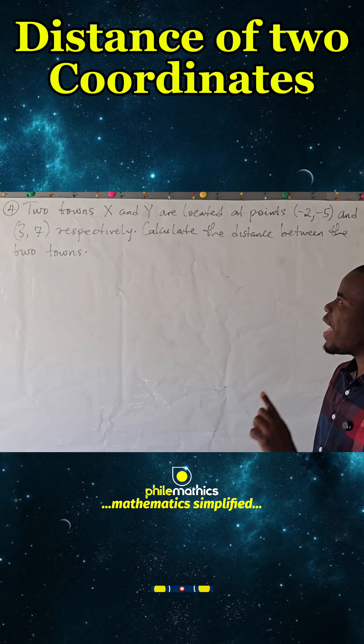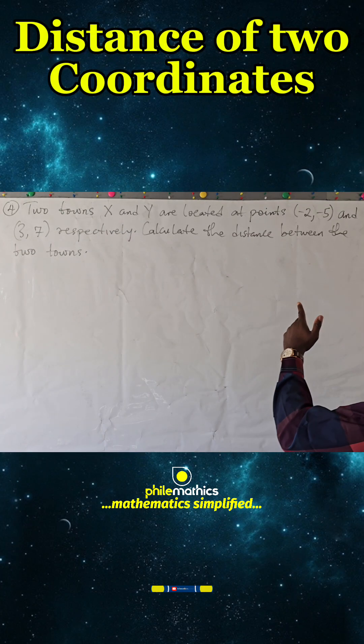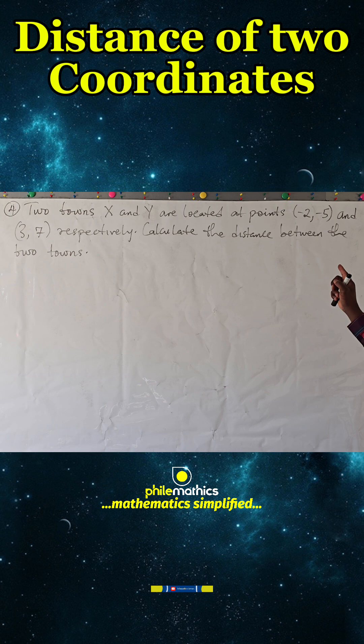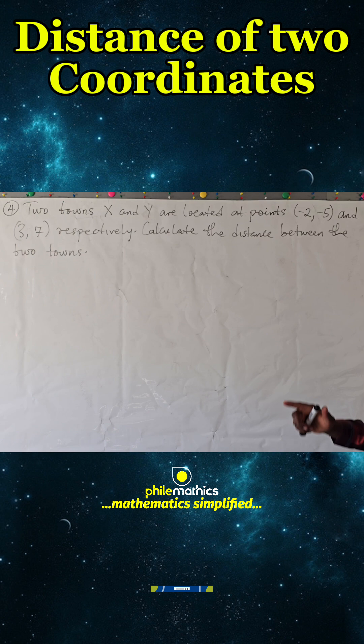Two terms X and Y are located at points (-2, -5) and (3, 7) respectively. Calculate the distance between the two terms.